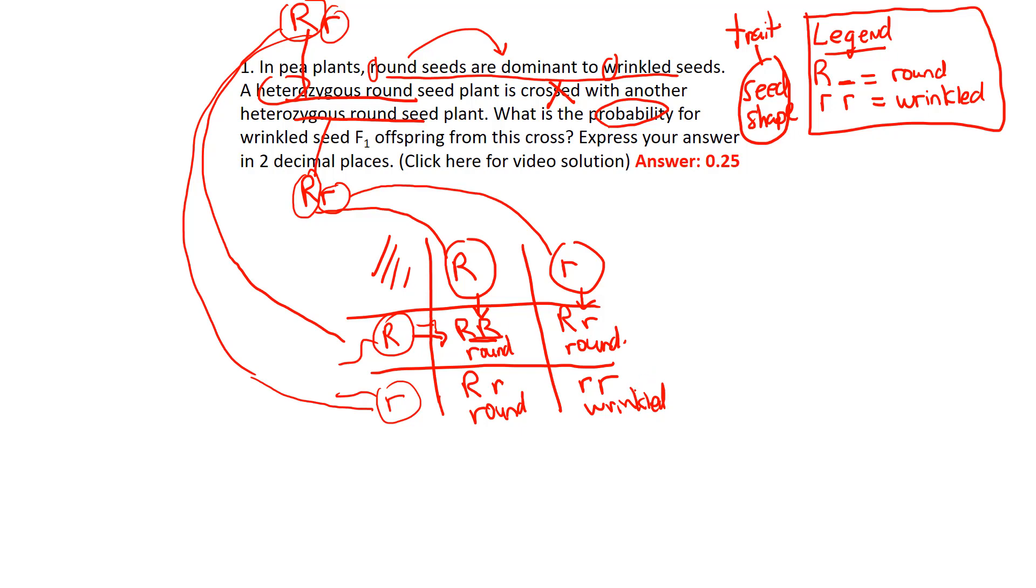Now let's see what the question was actually asking. It says, what is the probability for wrinkled seeds? They're asking out how many of these offspring are going to be wrinkled from the F1 generation. And again, F1 generation just means the first generation of that cross with those two parents. Sometimes you'll see P1, those are the first parents. When you cross P1 parents, you get an F1 offspring.